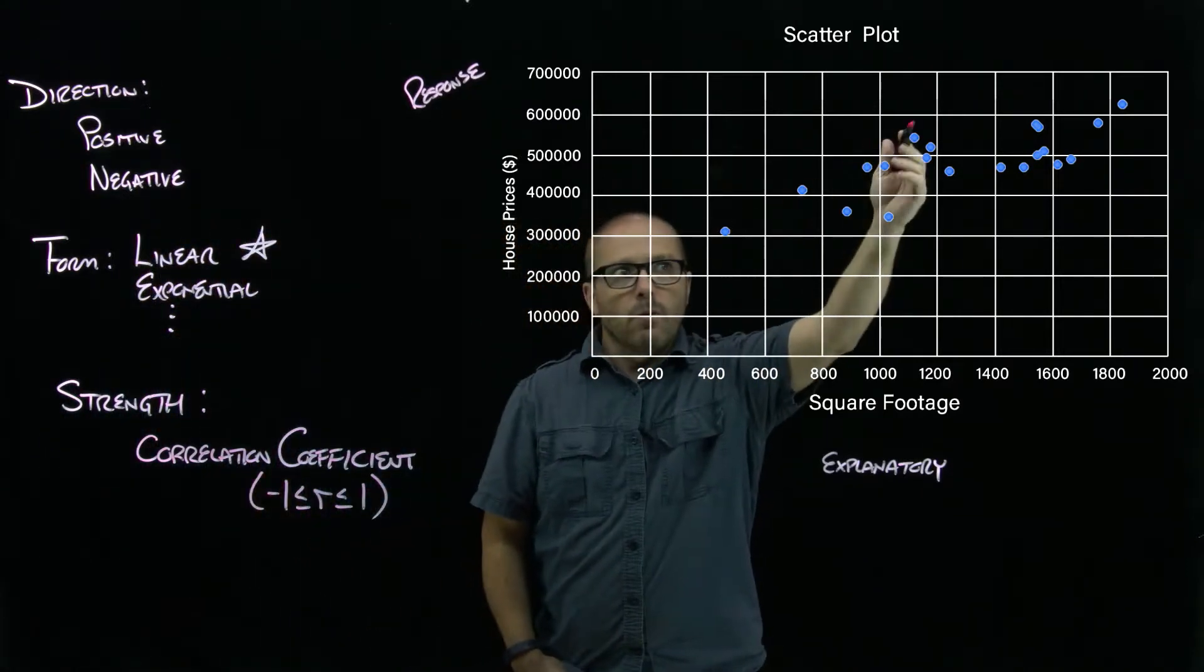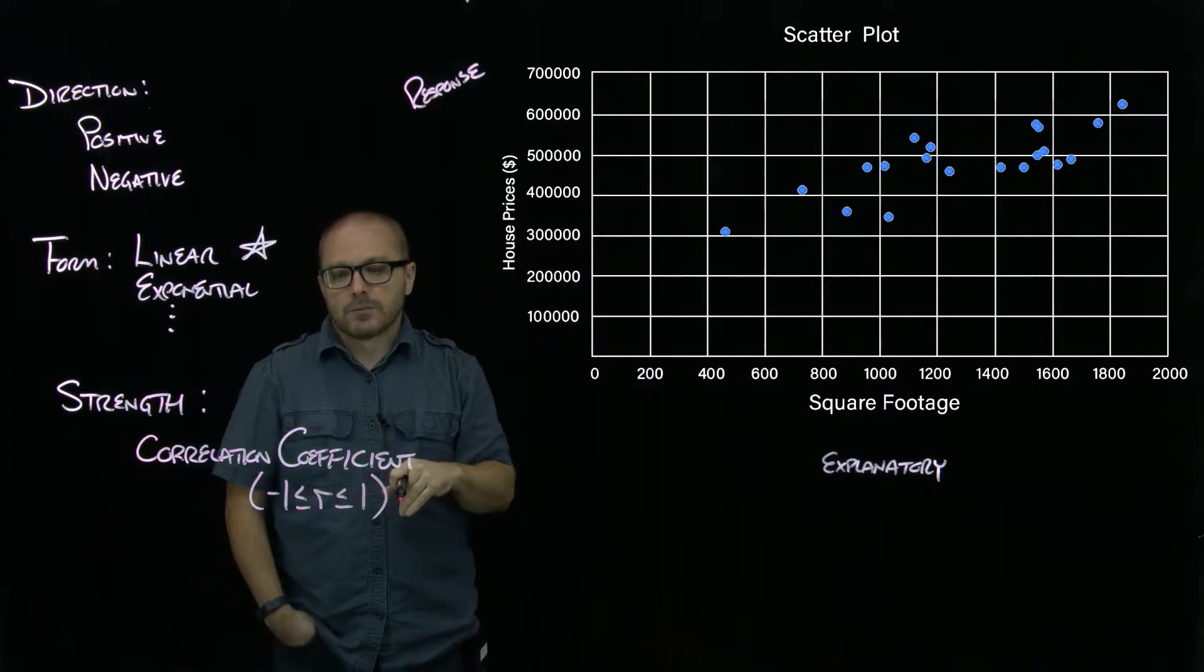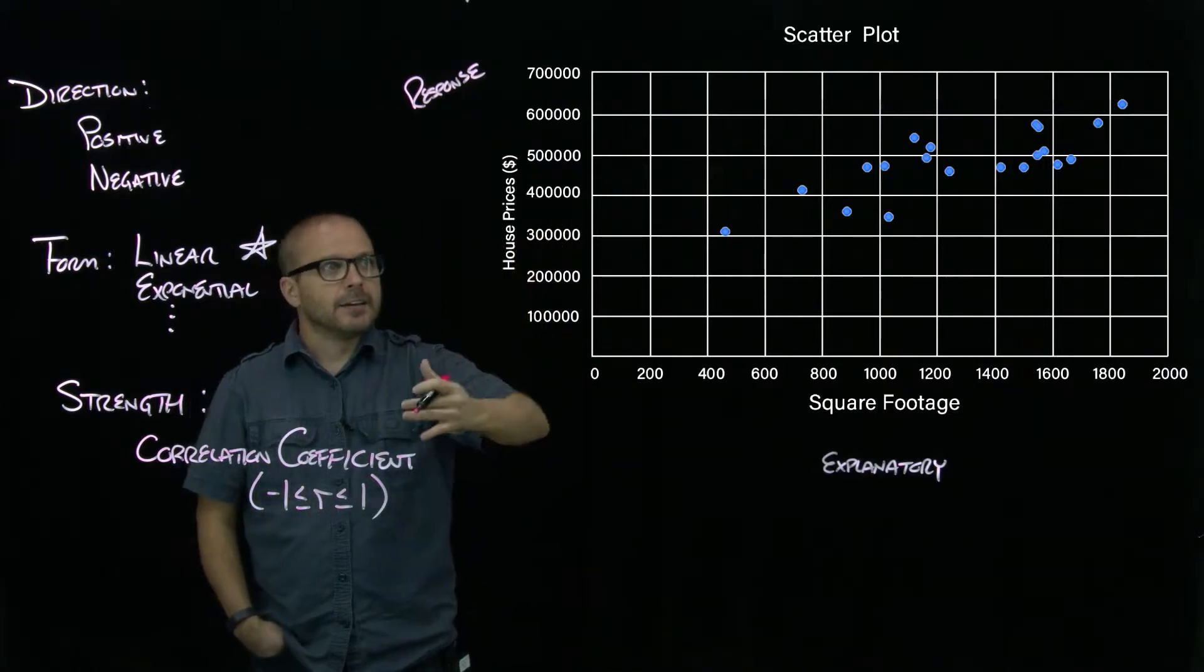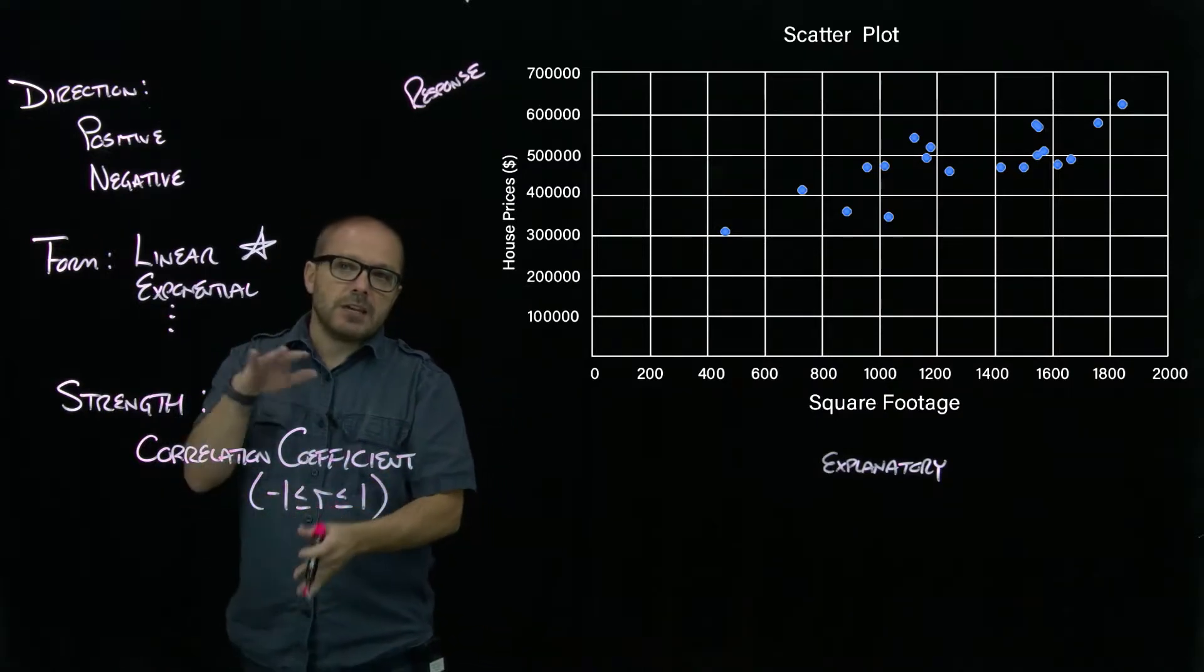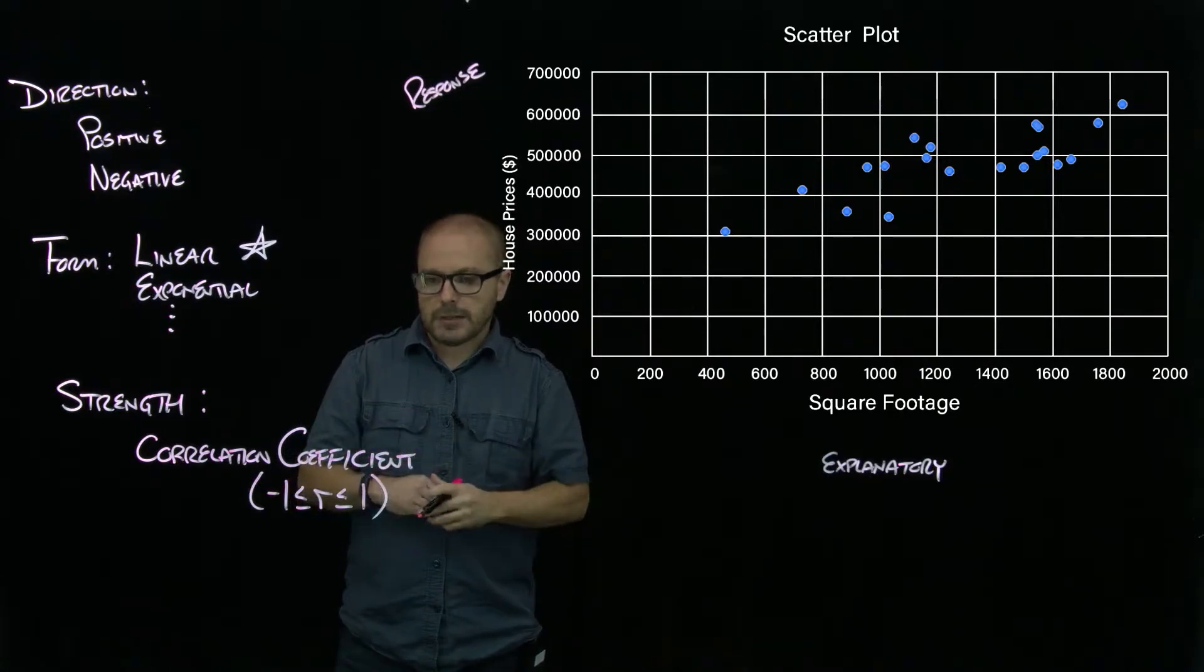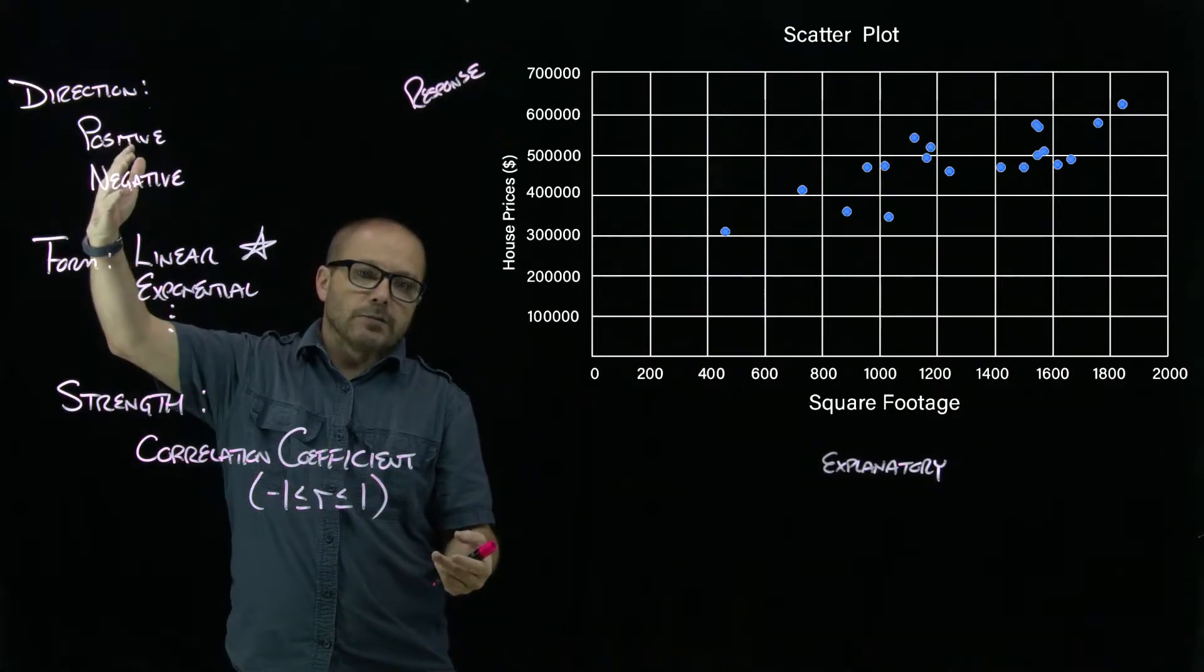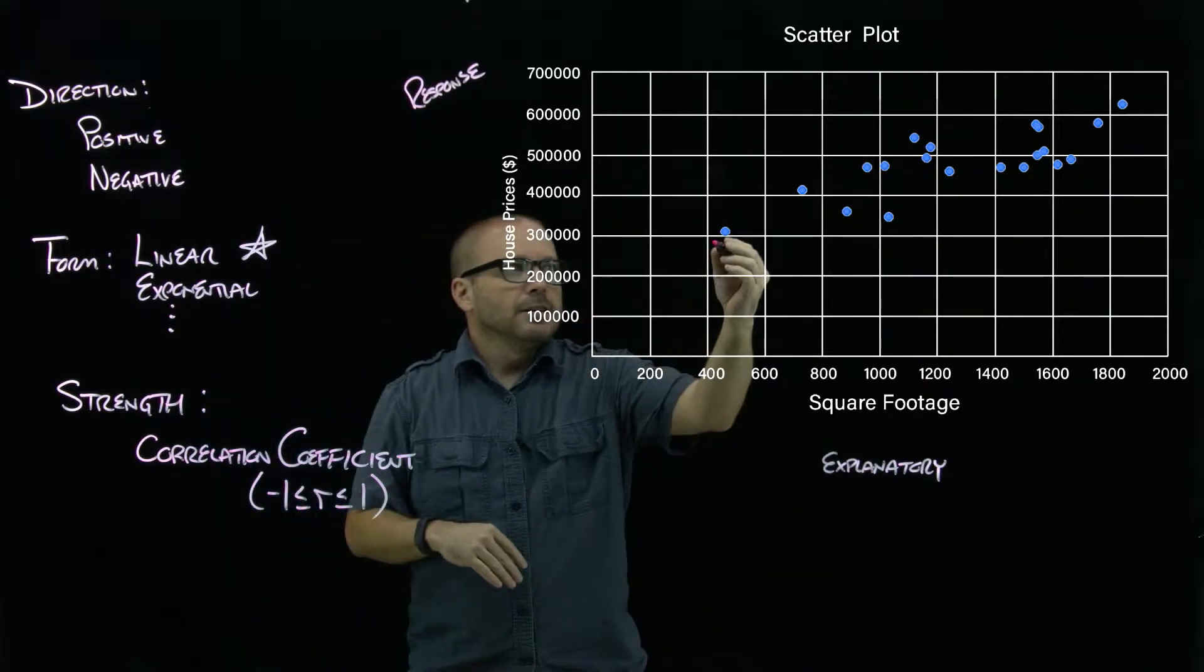This R is going to be a measure of how well these dots fit to a line, and that's related to what we're going to talk about later—which is what is that line, what would be the line that best fits that data? And then R is some measure of the deviation from the line—how is our data deviating from the line? So this R captures not only the strength but also the direction.